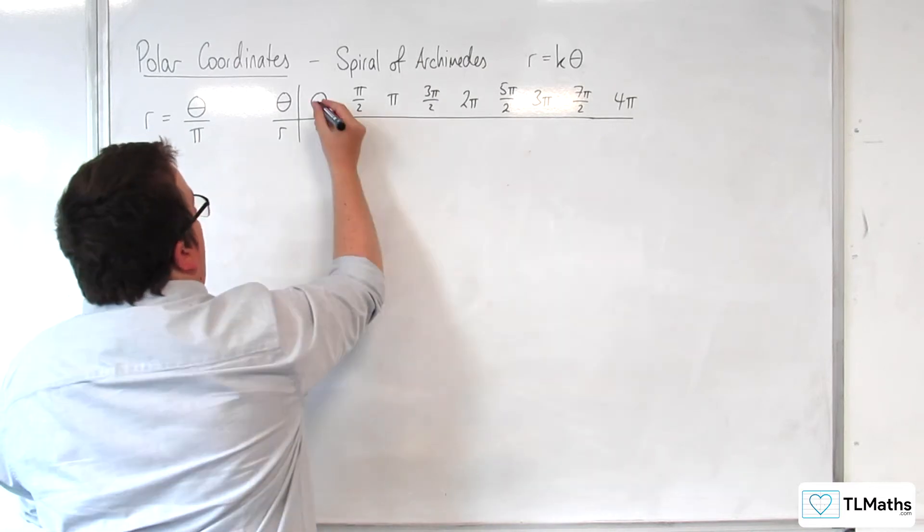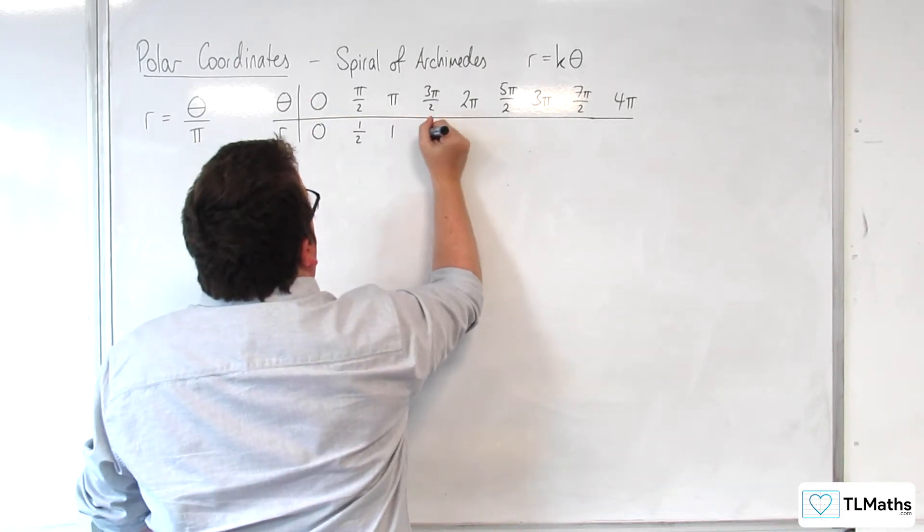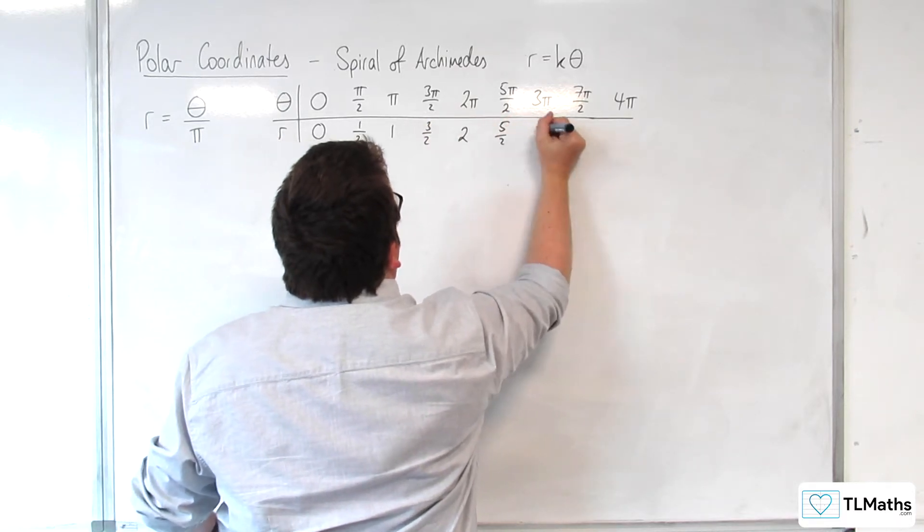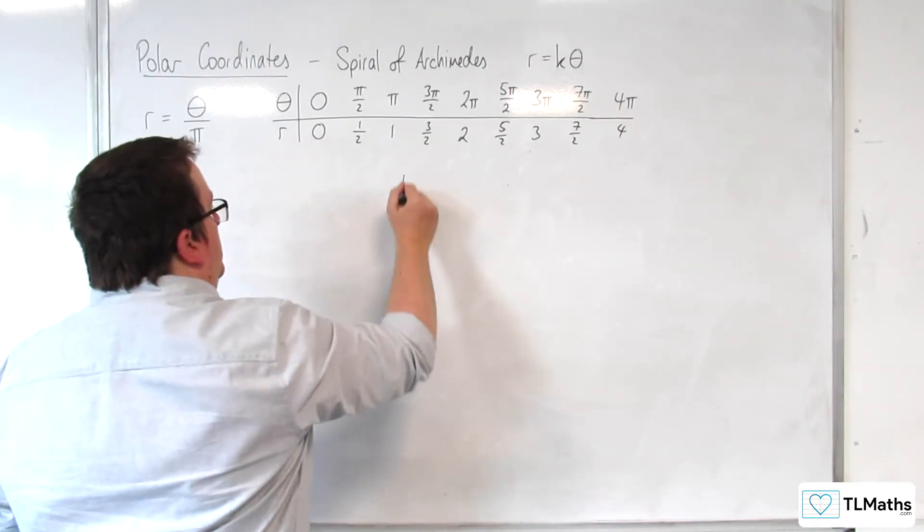So, we're going to divide each of those through by pi. So, 0, 1 half, 1, 3 halves, 2, 5 halves, 3, 7 halves, 4.